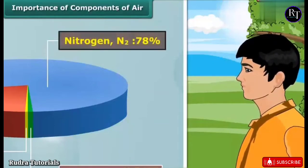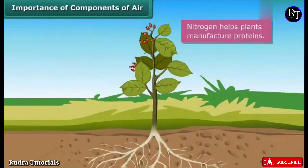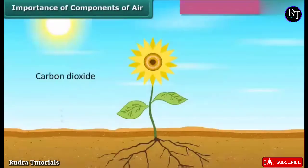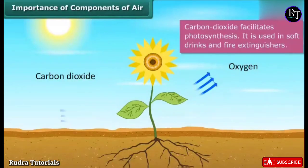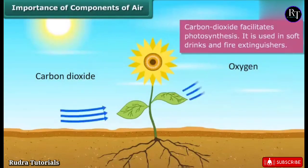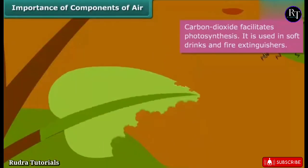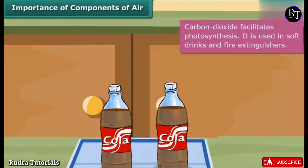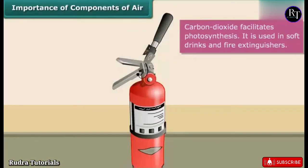Nitrogen helps plants manufacture their proteins and does not support combustion. Carbon dioxide facilitates photosynthesis. It prevents grains from being destroyed by insects. As it dissolves in water, it is used to prepare soft drinks. Fire extinguishers also contain carbon dioxide.